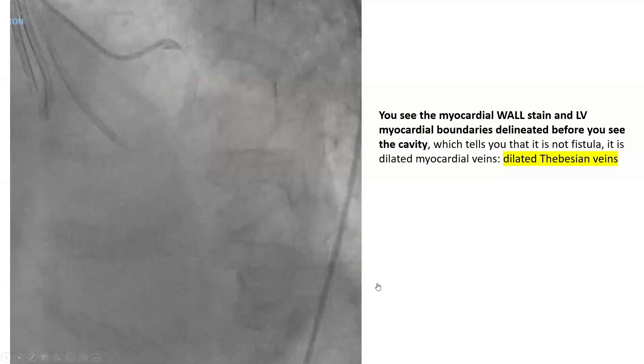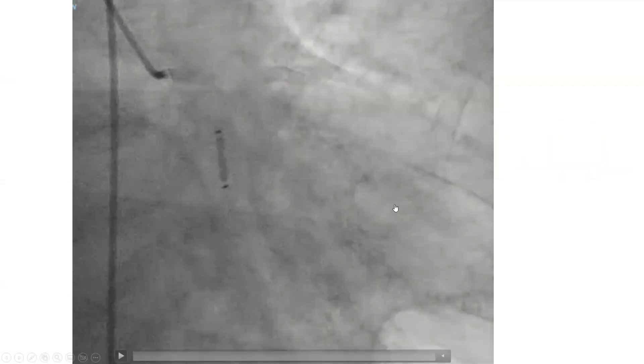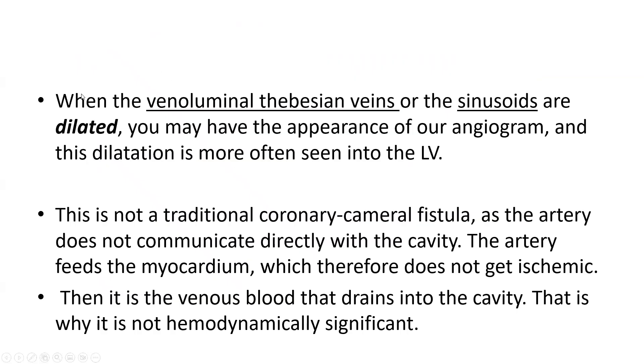Another way of proving it's not hemodynamically significant: if it were, you would have a left-to-left shunt — almost like an AI — and the LV will dilate. The LV in those patients is not dilated. So that's another proof: no big left-to-left shunt recirculation. When the venoluminal Thebesian veins or the sinusoids are dilated, you may have the appearance of our angiogram, and this dilatation is more often seen into the LV.